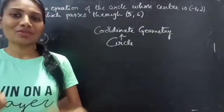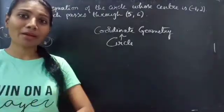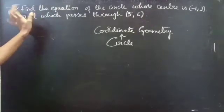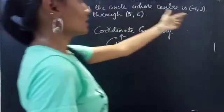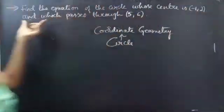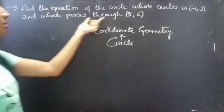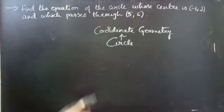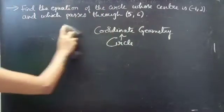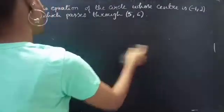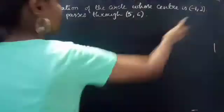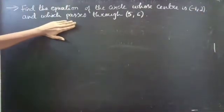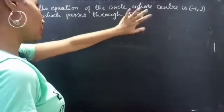Hello everyone, this is Jay Kaltana here. In this video we are going to see a problem from circles. So let's get started. Find the equation of the circle whose center is the ordered pair (-1, 2) and which passes through the ordered pair (5, 6).